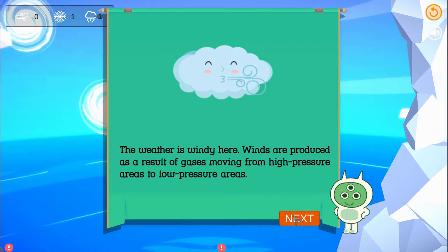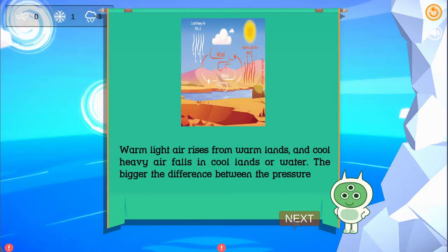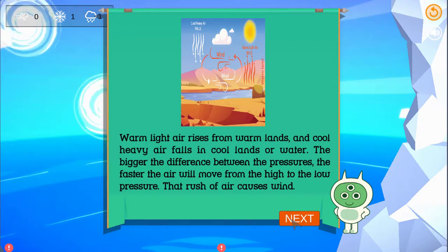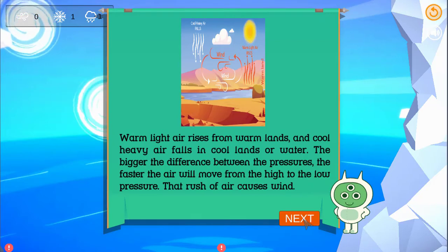The weather is windy here. Winds are produced as a result of gases moving from high pressure areas to low pressure areas. Warm light air rises from warm lands and cool heavy air falls in cool lands or water. The bigger the difference between the pressures, the faster the air will move. That rush of air causes wind.